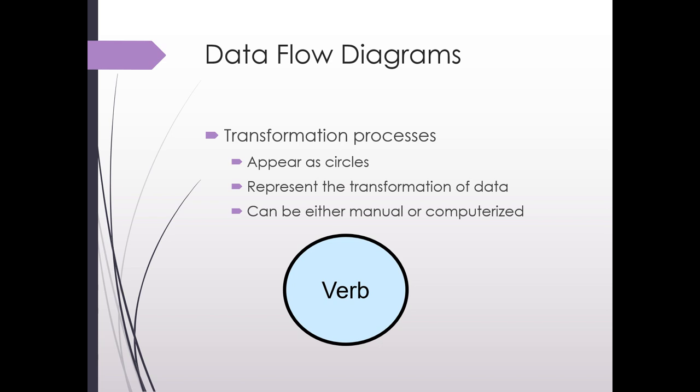Next we have the circles and these are transformation processes. So this is where the action happens. You will put these as verbs. So you put a verb within the circle. Think of words to get you started if you're having trouble naming a transformation process: update, process, prepare, create. Start with one of those four words and that will usually help you find the right word to describe that process. So they are representing some transformation of the data. So whatever data is coming in is now transforming. The deposit is created or we take out the accounts receivable information. This could be done manually or computerized. And that's because the data flow diagram is focusing on how the data moves through the process more than how it is being done.